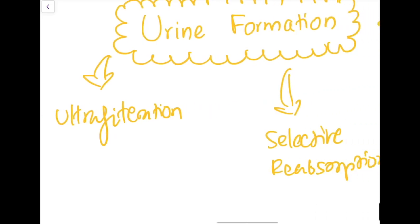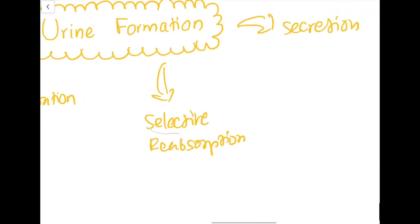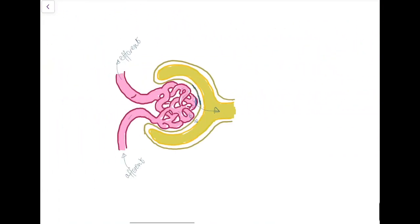The second step is selective reabsorption. Even though plasma proteins, RBCs, and platelets are retained, there are other substances the body needs — glucose and amino acids — that must be reabsorbed back into the blood. Selective reabsorption is the process through which useful molecules like ions and water from the glomerular filtrate are recovered and returned to the blood via the capillary network of tubules.